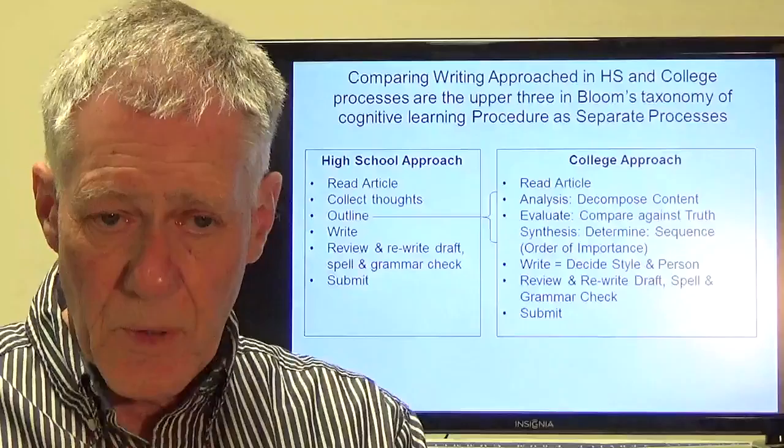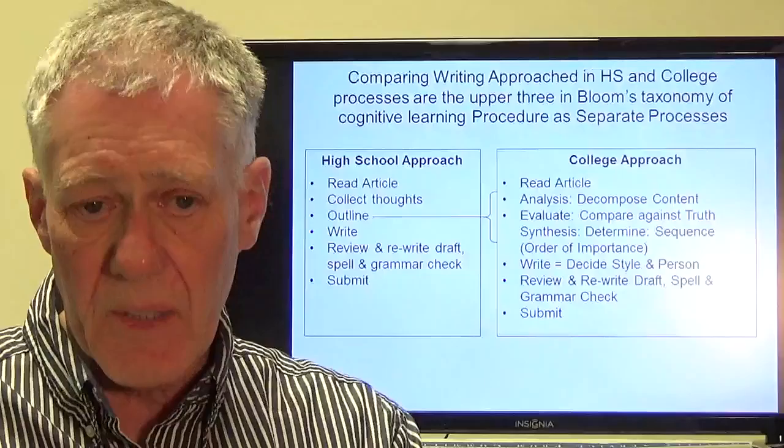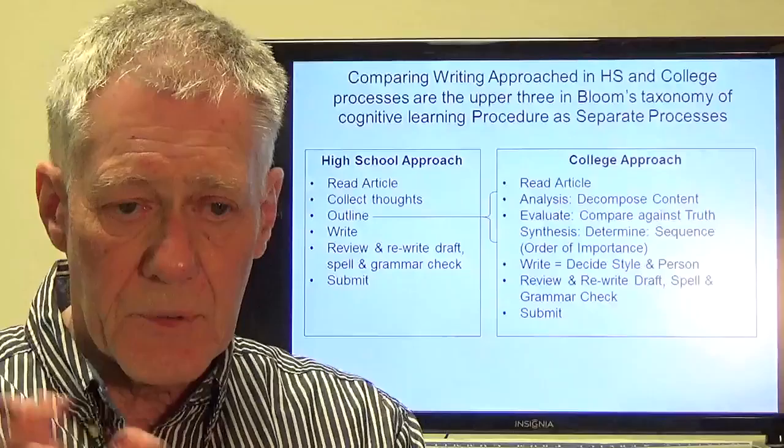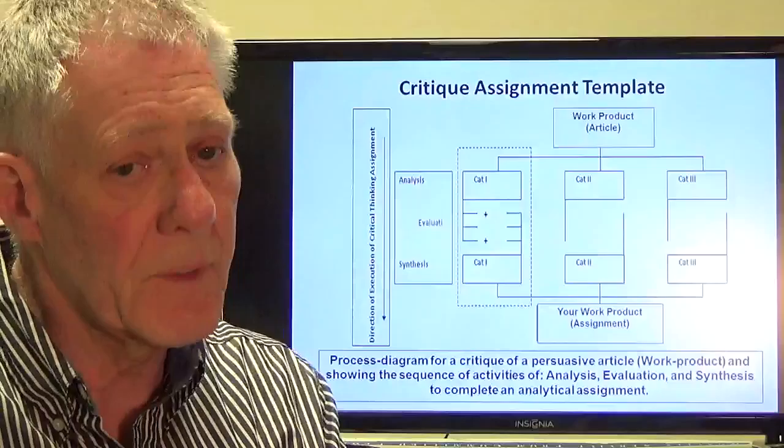On the left-hand side there's the high school approach: you read it, collect all the things, write the outline, and away you go. But what we're going to talk about here is a college approach, which I would recommend. That is, you do all this analysis, evaluation, and synthesis in order to get an outline. Then you can write it in the style and person you're going to write. Review it, spell check, and submit it.